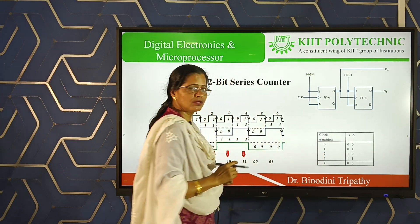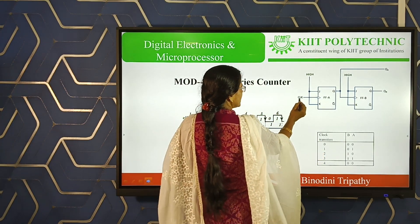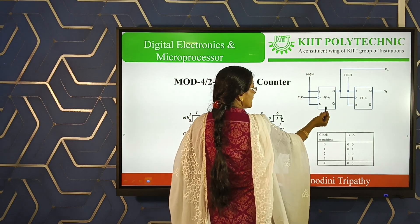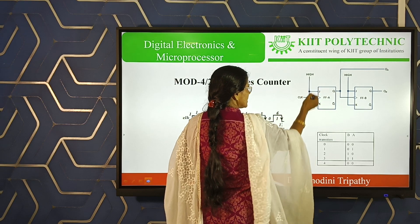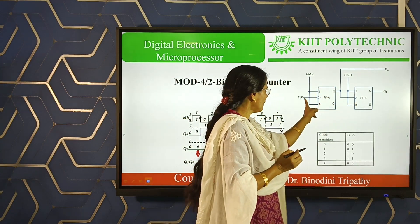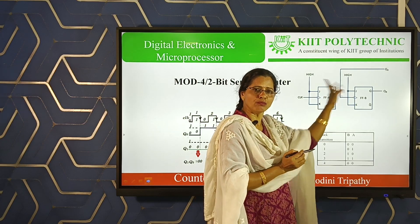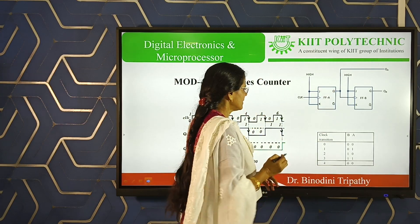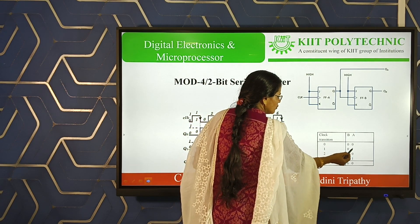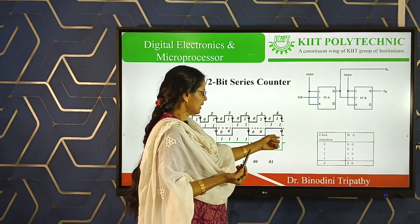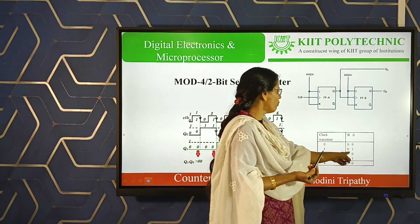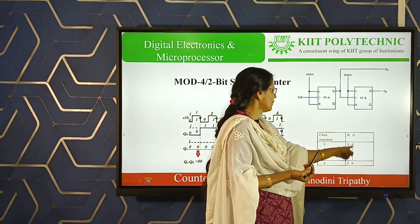Initially, the output of flip-flops is 0, 0 and the clock is also 0. When you apply the first clock pulse, as per the JK flip-flop at state J=1, K=1, it will toggle. Initially it was 0, so when you apply the clock pulse it will toggle to the 1 state. So when you apply the first clock pulse, the output will show 0, 1. Similarly, when you apply the second clock pulse, it will show 1, 0.